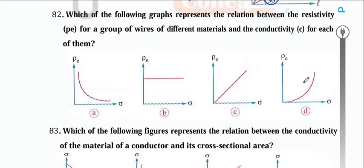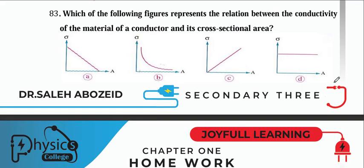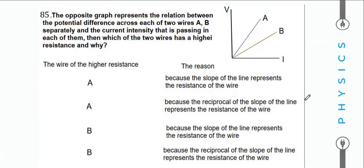Which graph represents the relation between resistivity and conductivity? Since they are inversely proportional (multiplicative inverses), choose the inverse/hyperbola graph. The relationship between conductivity and area is constant since conductivity depends only on material and temperature.